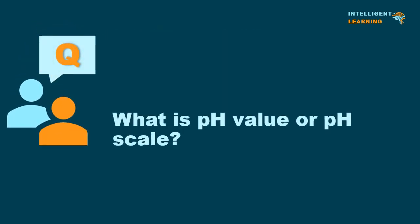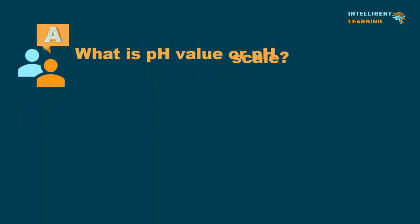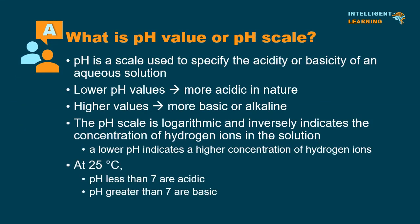What is pH value or pH scale? pH is a scale used to specify the acidity or basicity of an aqueous solution. Lower pH values correspond to solutions which are more acidic in nature, while higher values correspond to solutions which are more basic or alkaline. pH is the negative of the base 10 logarithm of the activity of the hydrogen ion. The pH scale is logarithmic and inversely indicates the concentration of hydrogen ions; a lower pH indicates higher concentration of hydrogen ions. At 25 degrees Celsius, solutions with a pH less than 7 are acidic, and solutions with a pH greater than 7 are basic.